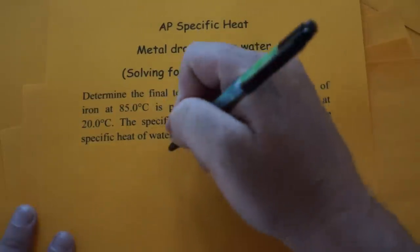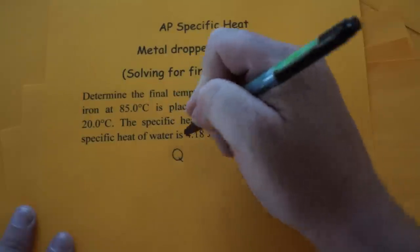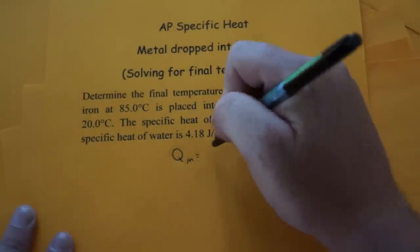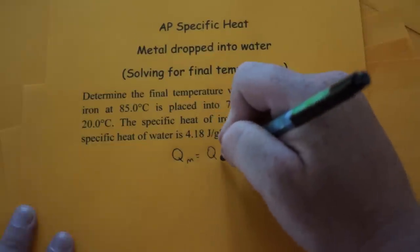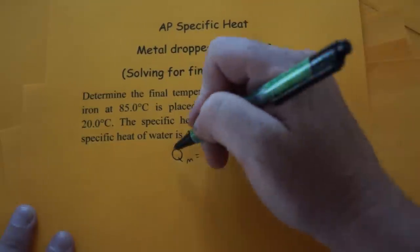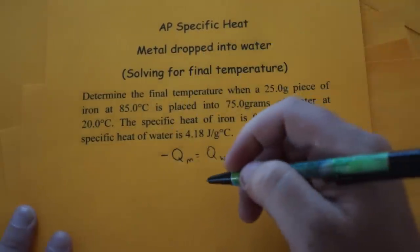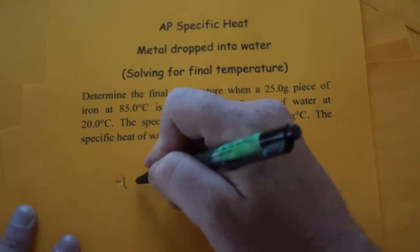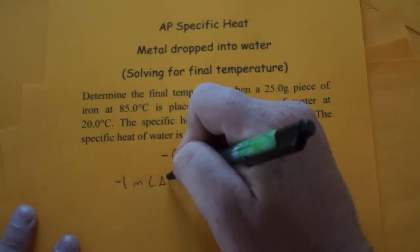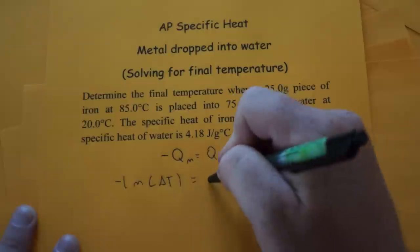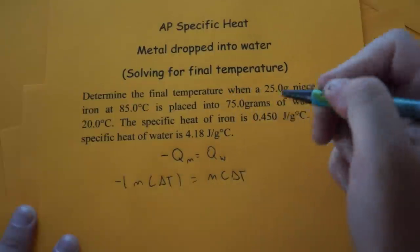What we have to know is the Q or the heat of the metal, the change in heat of the metal is going to equal the change in heat of the water. But the metal is going to lose energy so we're going to put a negative there. So what we really have is negative m C delta T for the metal and m C delta T for the water.